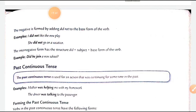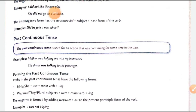The negative is formed by adding 'did not' to the base form of the verb. In the simple past affirmative, we use the second form; but in negative, with the helping verb 'did not', the main verb goes back to root form. For example: 'I did not like' — we use 'like', not 'liked'. 'She did not go' — we use 'go', not 'went'. Remember: when we use a helping verb, we use the root form. The interrogative uses: did + subject + base form.